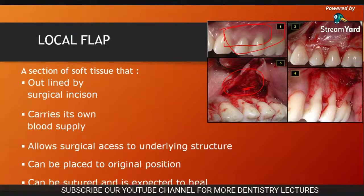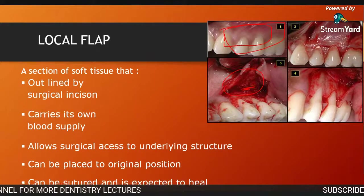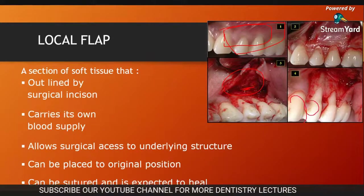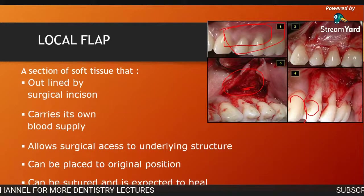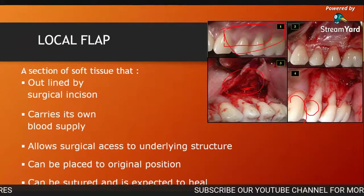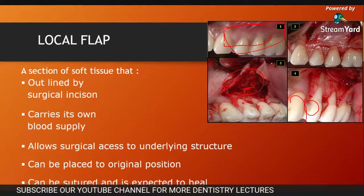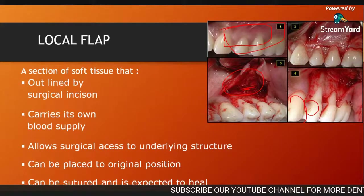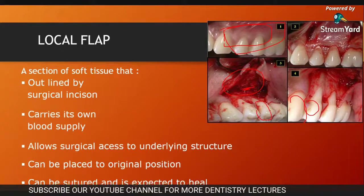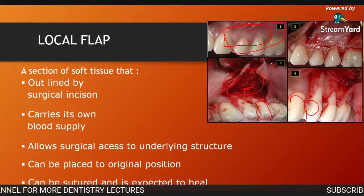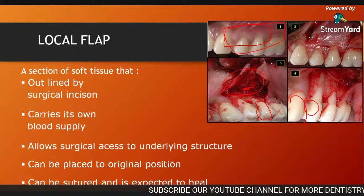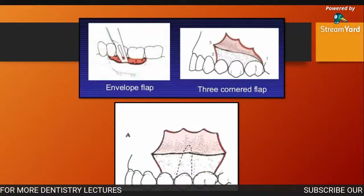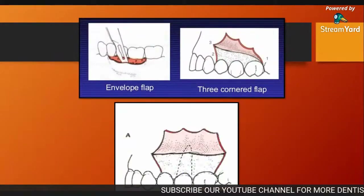What you need to do is raise a flap, which allows surgical access to the underlying structures. For example, if you need to remove a canine or first premolar, you raise the flap and get surgical access to the underlying structures. It can also be placed back to its original position and sutured, expected to heal. If you need to do any complicated surgical procedure, you raise the flap, do the curettage or other procedure you want, then place it back and suture it — it heals very quickly.